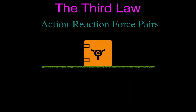Here we have a safe sitting on the ground. We want to draw the action-reaction pairs for the safe and the ground. The safe is pushing on the ground — this is the force on the ground from the safe. Then we have the force on the safe from the ground. You want to make sure you draw them on separate objects — this one should be on the safe somewhere.